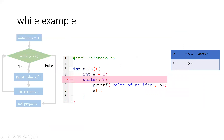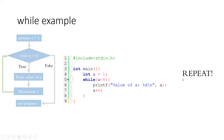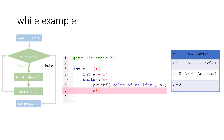Initially, 'a' is 1. We evaluate the condition: is 1 less than 6? Yes, it is true. So it prints the value of 'a', which is 1. Then we proceed to the update and increment 'a', so now 'a' equals 2. We go back to the condition and re-evaluate: is 2 less than 6? Yes, it is still true. So it executes the printf again and prints the value of 'a', which is 2. Then we increment 'a' again, so now 'a' equals 3.